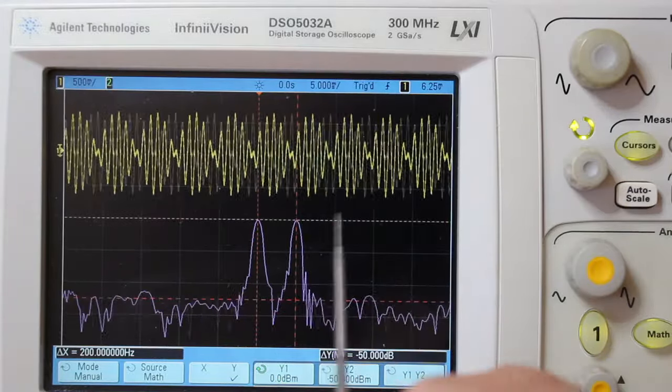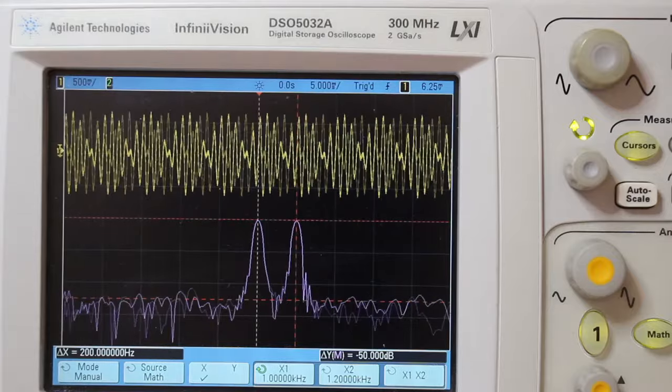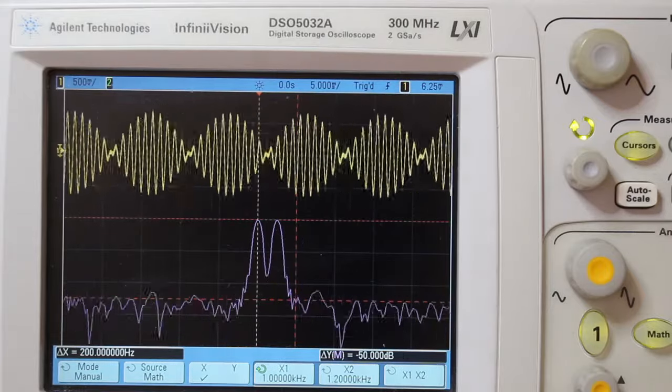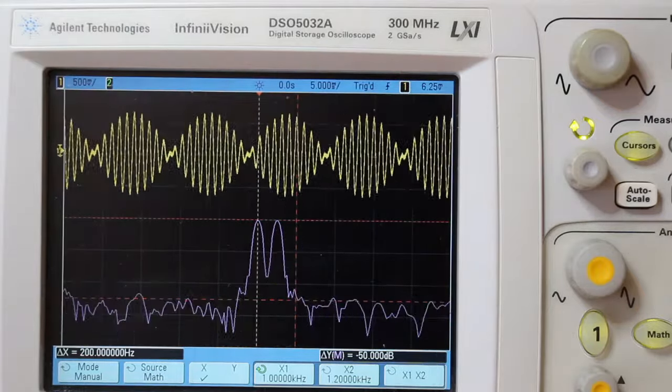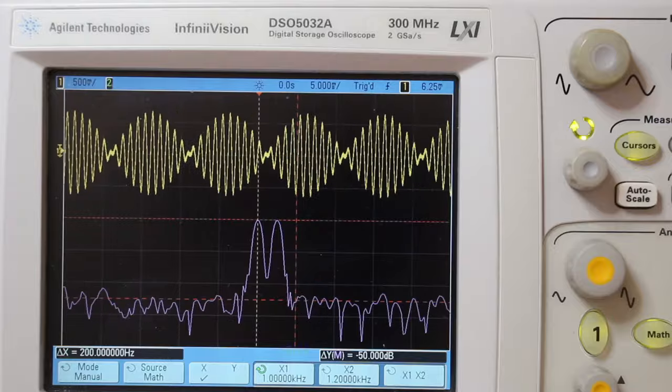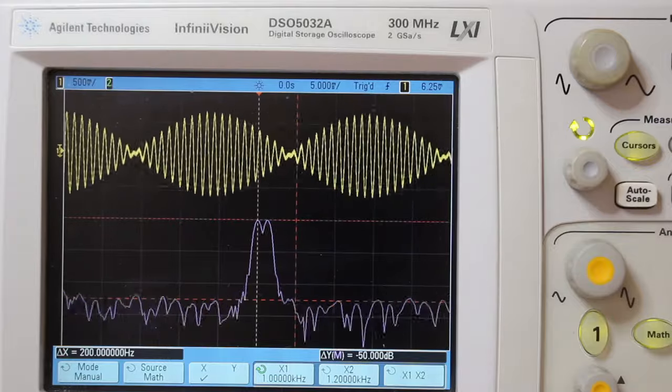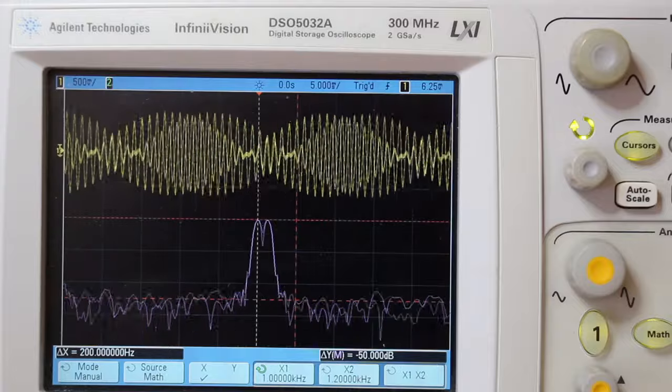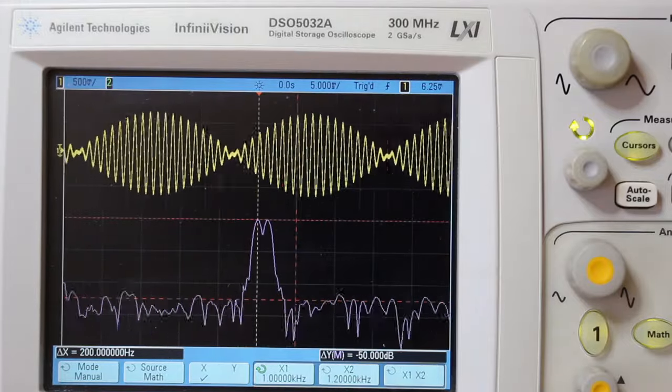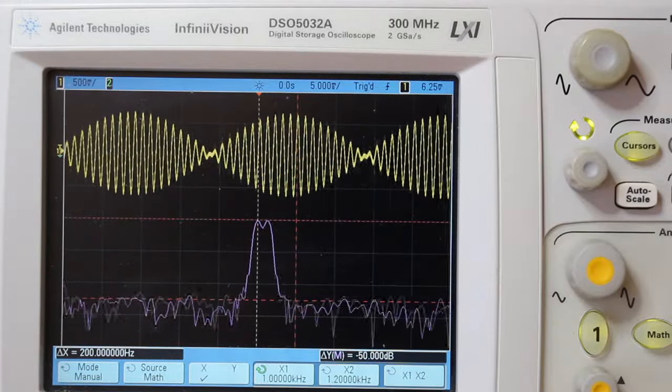Let me reduce the difference between tones to 100 Hz. Again the instrument is struggling to show the two tones. And now if I reduce even more to 50 Hz, we can see that the same limitation appears.